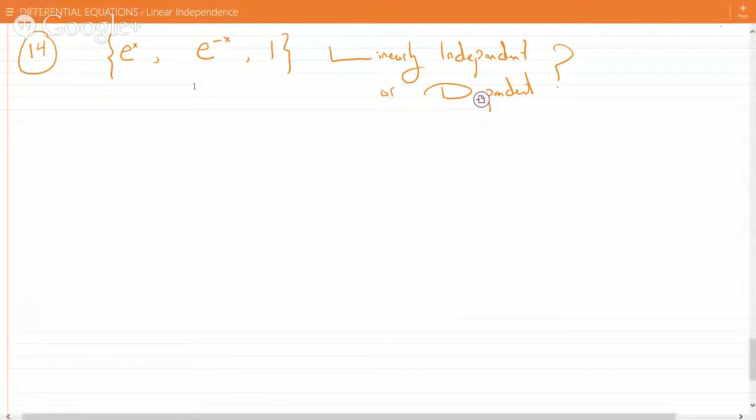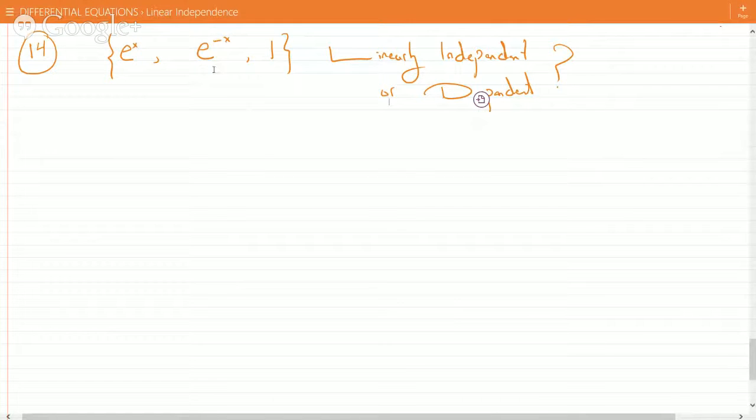So we have e to the x, e to the negative x, and 1. Right, Ben? And the question is if they're linearly independent or dependent. It looks like they will be independent because it doesn't seem that e to the x and e to the minus x will be connected otherwise, especially through a third constant.